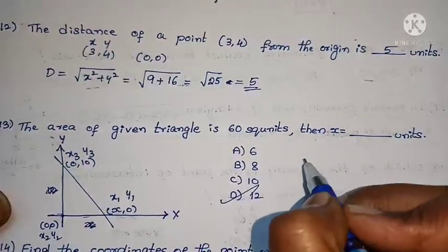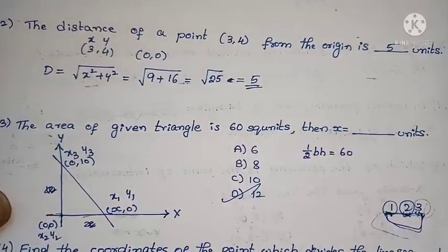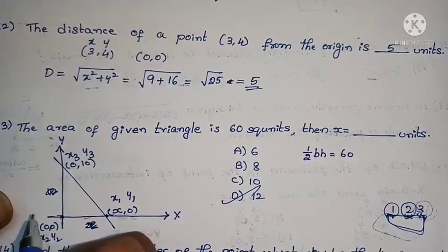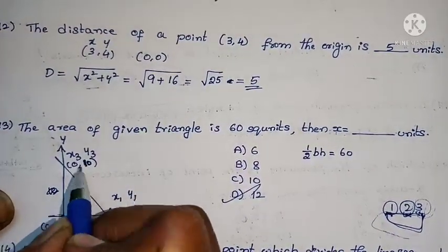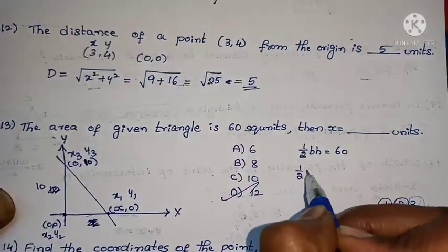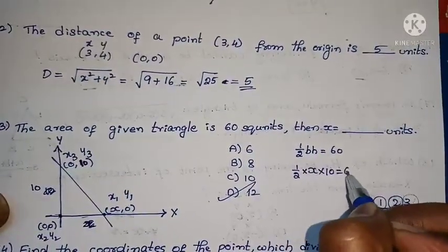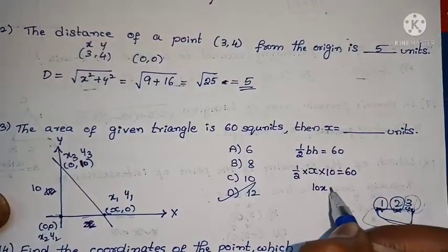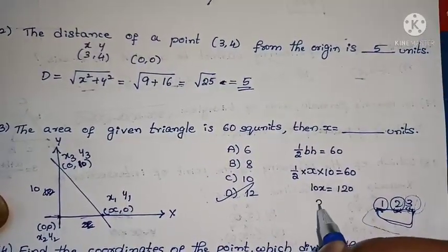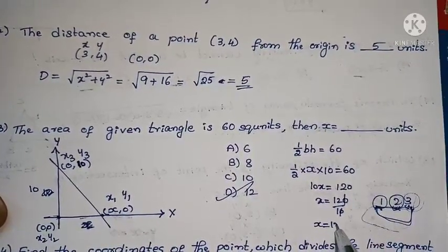There's one more method. Area of a triangle formula is half times base times height equals 60 square units. From here to here, distance is x value. From here to here, distance is y value, which is 10. From here to here is the base. Half into base which is x, times height which is 10, equals 60. So 10x equals 120, divide by 10: x equals 12.